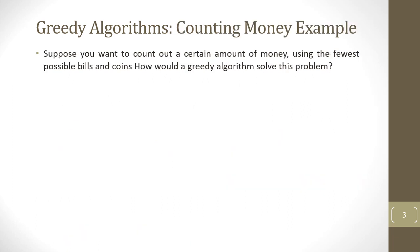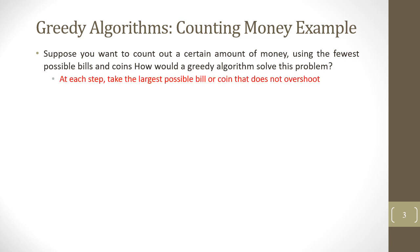Let's have a look at a real world example where we apply a greedy algorithm in daily life. Suppose we want to count out a certain amount of money using the fewest possible bills and coins. How would a greedy algorithm solve this problem? At each step, we take the largest possible bill or coin that does not overshoot.